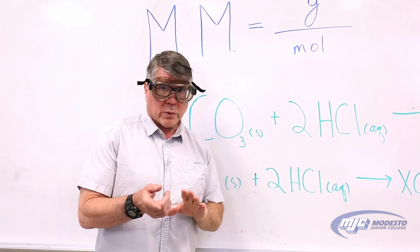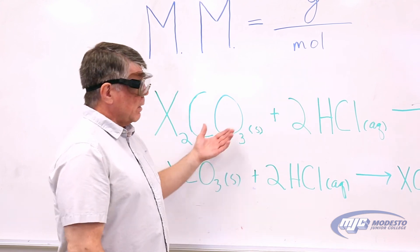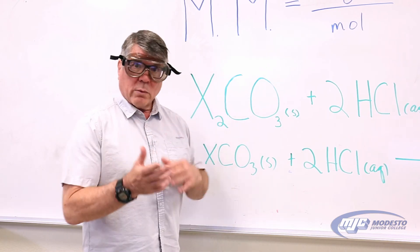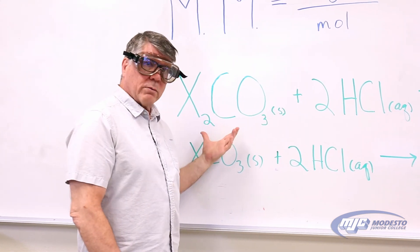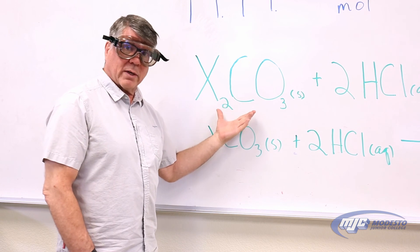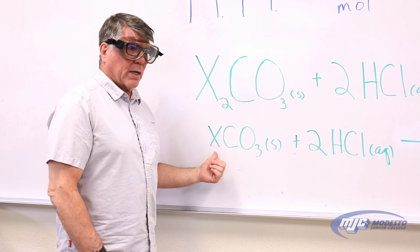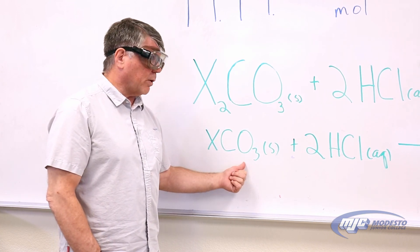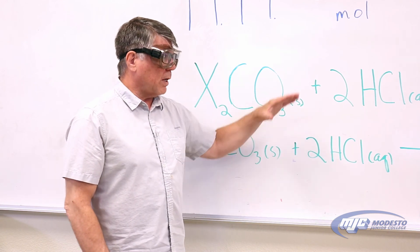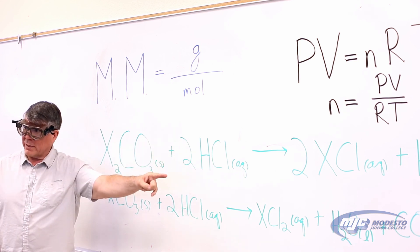Here's where the ideal gas law comes in. We're going to take the unknown carbonate and react it with hydrochloric acid. Whenever you react any carbonate with an acid, the reaction looks something like these two equations. If the cation has a plus-one charge, the formula looks like two cations with one carbonate. If the cation has a plus-two charge, it's one-to-one. But in either case, the balanced equation always produces a one-to-one mole ratio of carbon dioxide gas to our unknown.